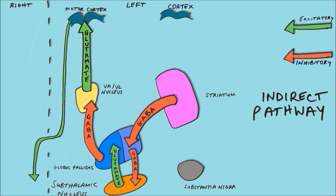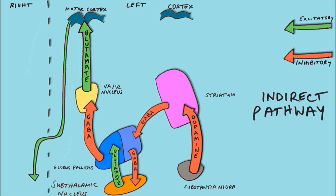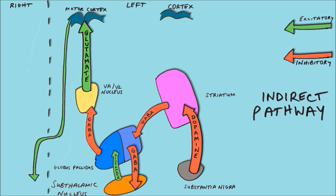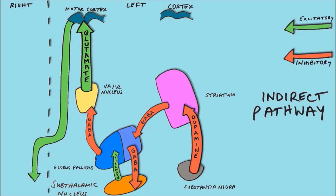The opposite occurs if we decrease the activity of the striatum in the indirect pathway. This is done by the action of dopamine from the substantia nigra acting at D2 receptors. The striatum therefore doesn't inhibit the lateral globus pallidus to the same extent, allowing it to increase its inhibition of the subthalamic nucleus. This reduces the extent to which the subthalamic nucleus can excite the medial globus pallidus, reducing its inhibition of the VAVL nucleus. This allows the VAVL nucleus to stimulate the cortex to a greater extent, resulting in increased motor output to the muscles of the body.